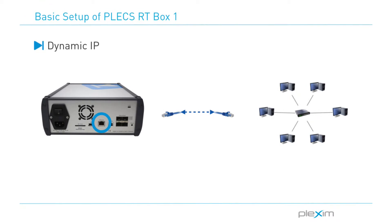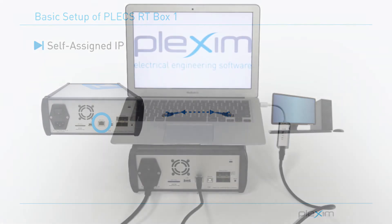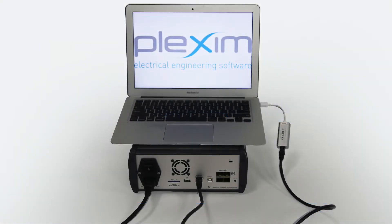In the case of a dynamic IP address, use an Ethernet cable to connect the RT box to your local network. The RT box then receives a dynamic IP address from an external DHCP server. In the case of a self-assigned IP address, connect the RT box directly to the host computer through an Ethernet port or an Ethernet adapter. Both the RT box and the PC use automatically assigned IP addresses. In this case, I'm making a point-to-point connection between my RT box and my host computer through a USB to Ethernet adapter.